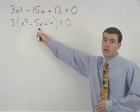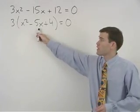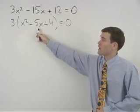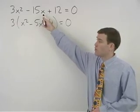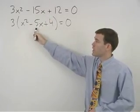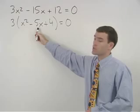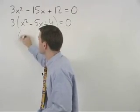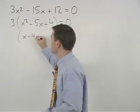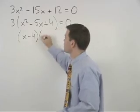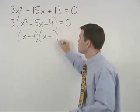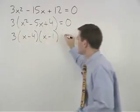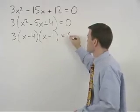Now we have a trinomial inside the parentheses that's much easier to factor than our original trinomial. x squared minus 5x plus 4 factors as (x minus 4) times (x minus 1). So bring down your 3 and set it equal to 0.